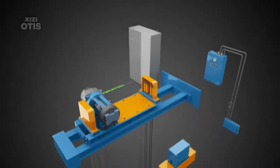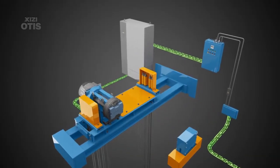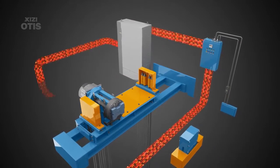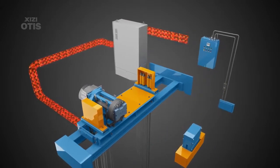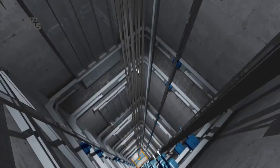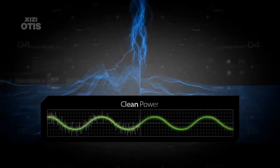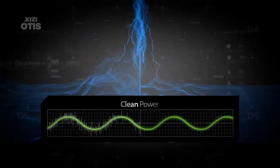Regen drives produce clean power thanks to low harmonic distortion, which minimizes impact on the building's electrical system and helps protect sensitive building equipment.